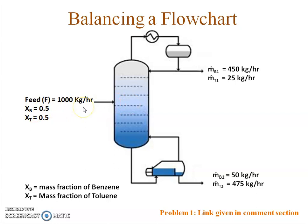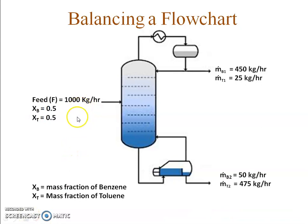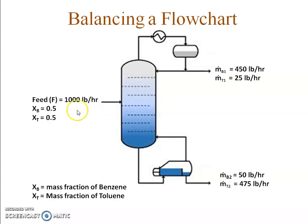Once I have a balanced flowchart, I can use it for different flow rates or different amounts as well. For example, if the flowchart is balanced in terms of kg per hour, I can exchange kg with any other mass unit. I can replace it with pounds per hour, or 1000 grams per hour — whatever the feed may be in terms of pounds, kg, or grams. I can change the units and my flowchart will still be balanced.